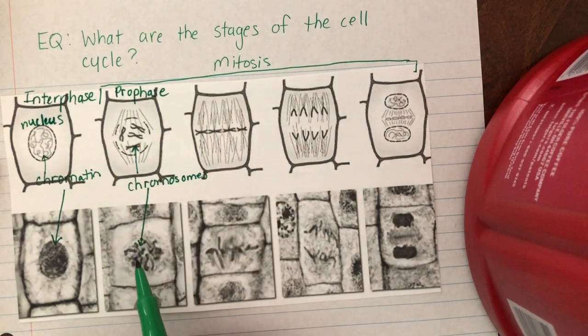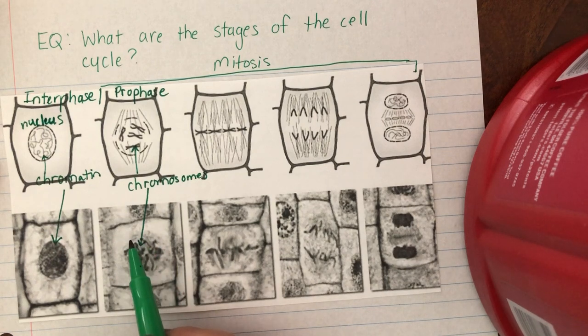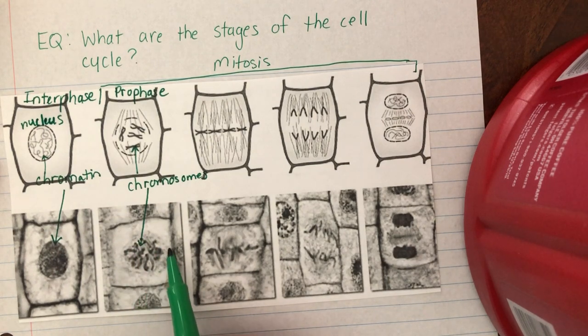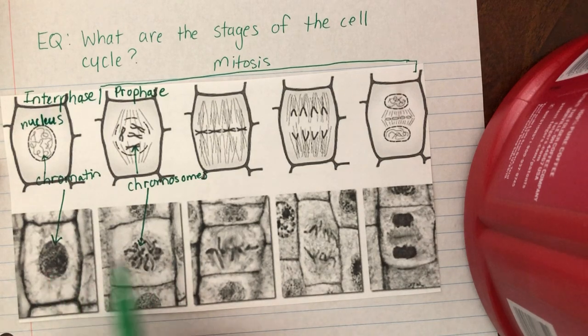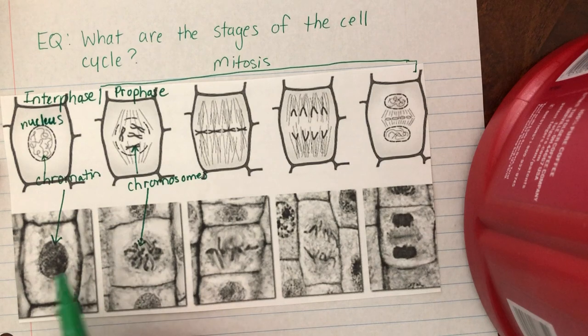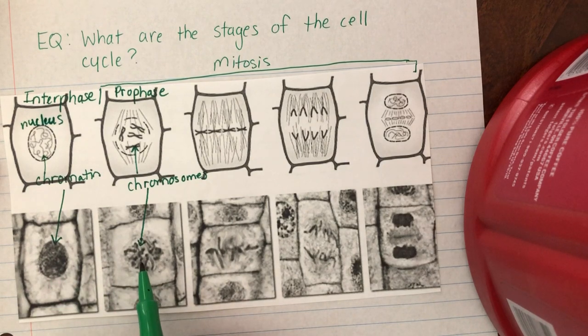You also see that the nuclear envelope is disappearing. This is a picture of it, and if you look at the actual image from a microscope, you can kind of see there was something there but it kind of seems to be fading away. And all of a sudden you can see the chromosomes. If you had a nuclear envelope then you wouldn't be able to see that. That's how you know it's disappearing.